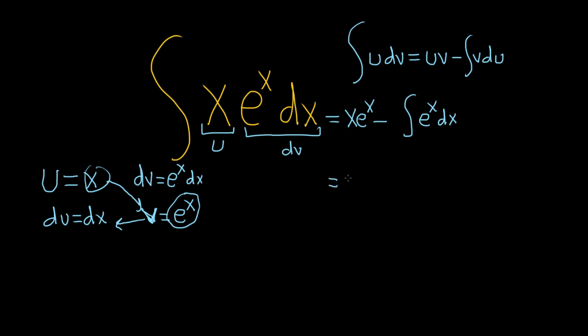Okay, so this is equal to x e to the x. And the integral of e to the x is e to the x. So now we have minus e to the x. And let's not forget our constant of integration, capital C. And so that would be the final answer. I hope this video has been helpful.